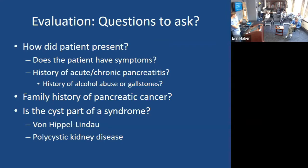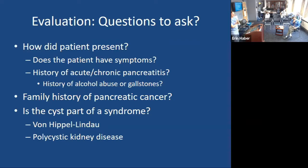Is that a pseudocyst — a remnant of prior pancreatitis, which is a benign entity that probably doesn't need to be followed? Do they have a family history of pancreatic cancer? If someone has a large cyst and their dad and uncle had cancer, that means something different. Lastly, do they have a syndrome that predisposes to certain types of cysts? Von Hippel-Lindau is one, where the tumor suppressor VHL chromosome is compromised — you get soft tissue growths or cancers and are also predisposed to serous cystadenomas.